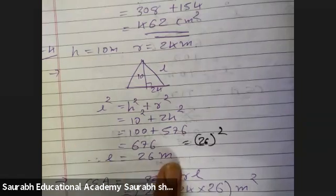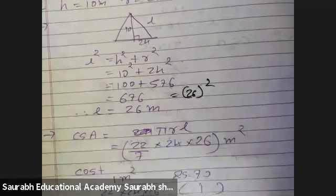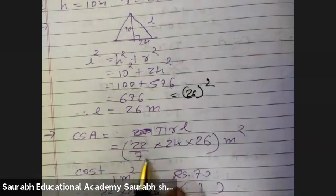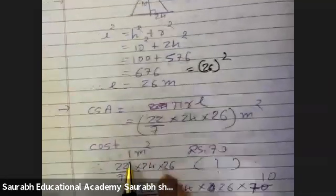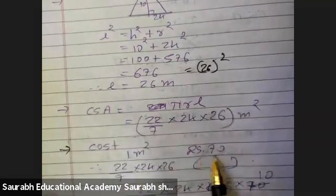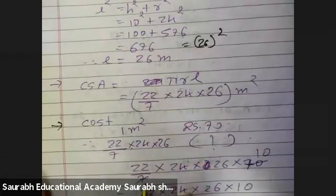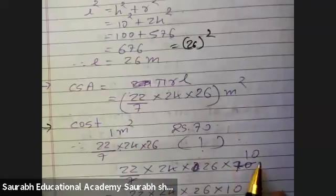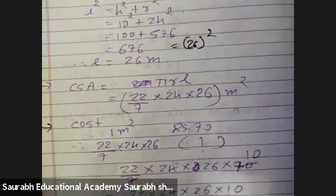Curved surface area equals π R L: 22 by 7 into 24 into 26. There is a second part — canvas rate is 70 rupees per meter square. So cost equals 22 by 7 into 24 into 26 into 70. Multiplying all gives 1,037,280 rupees.